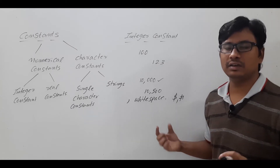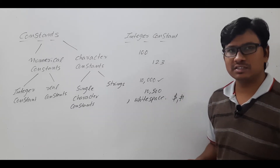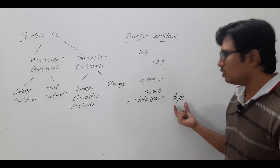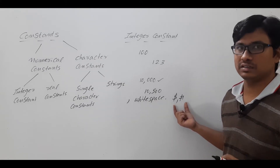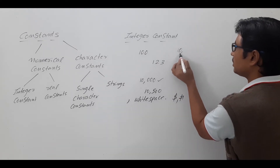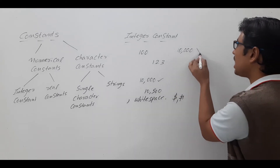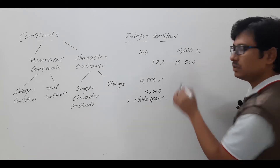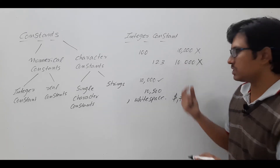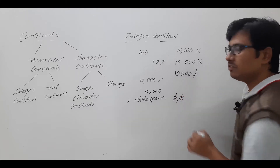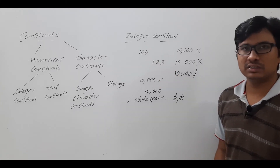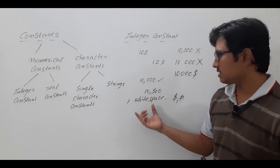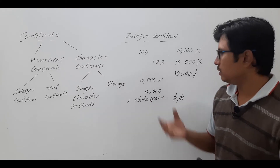Usually when we write money we include a currency symbol, but those things you should avoid when it comes to integer constants — no commas, no white spaces, no non-digit characters. For example, writing 10,000 with a comma is an invalid integer constant. Writing 10 000 with a white space is also invalid. Writing 10,000$ with a dollar sign is also not a valid integer constant.